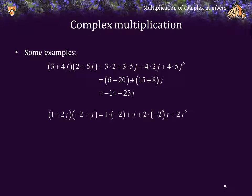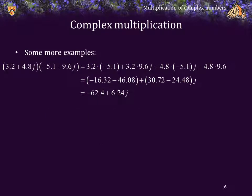Here's another example: 1 plus 2j times negative 2 plus j. Again — first: 1 times negative 2; outside: 1 times j, which is j; inside: 2j times negative 2; last: 2j times j. We replace j squared with negative 1, collect real and imaginary components, and that gives us our result. Here are some more examples you can go through on your own time, but the mathematics is the same.